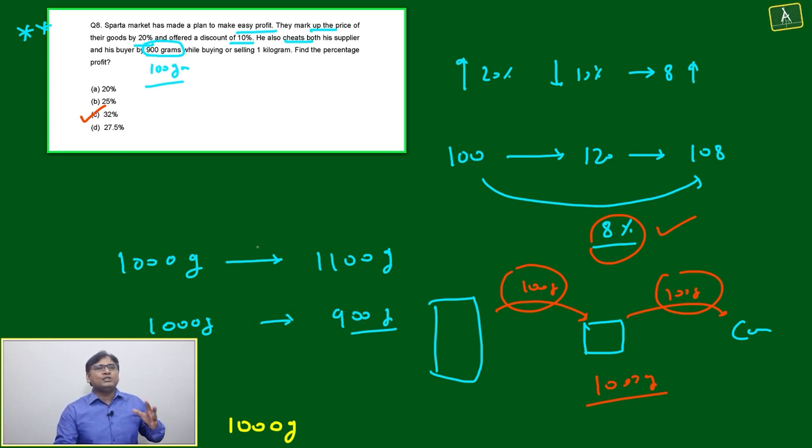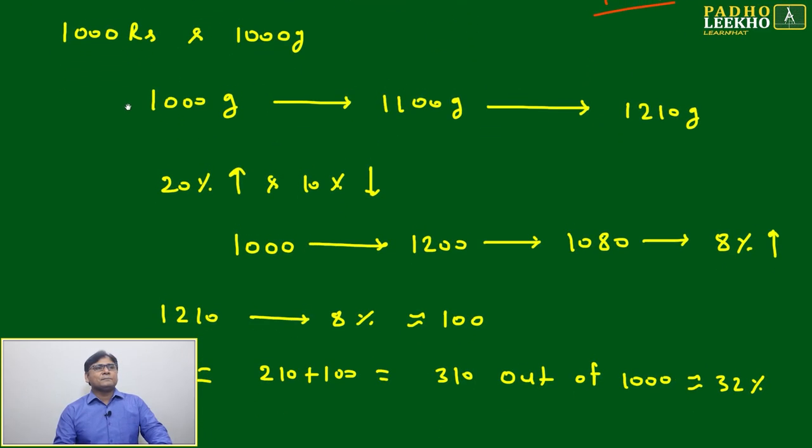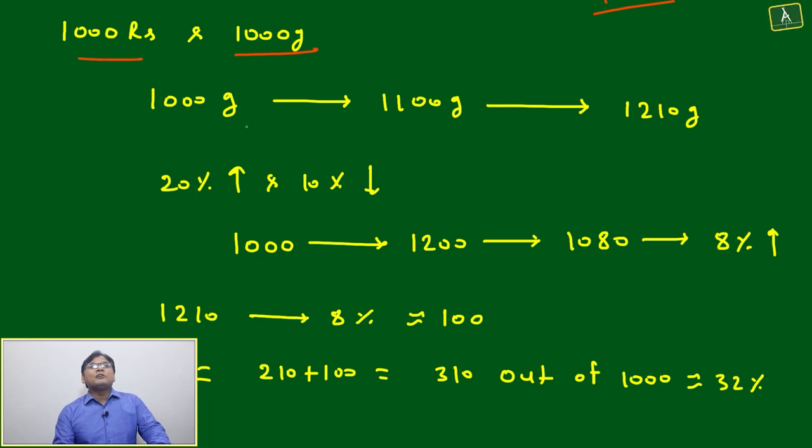If you're not confident, let's calculate it like this: you have taken 1000 rupees and you are purchasing 1000 grams. In place of 1000 grams you are taking 1100 grams - by cheating, 1100 grams. You are selling at 1210 grams.